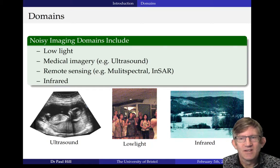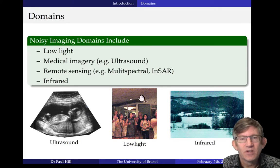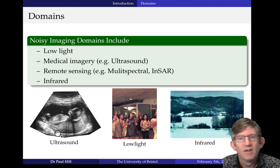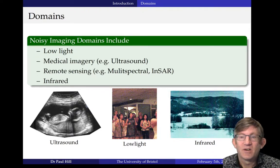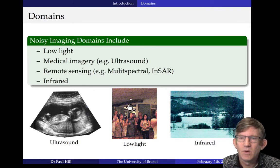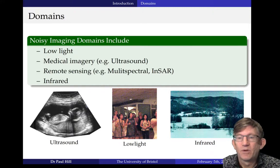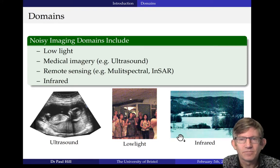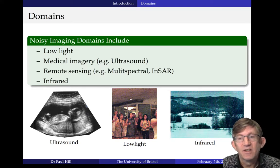Let's talk about some domains of denoising. Here are three or four different domains that all have inherent noise and lots of it. You're familiar with what ultrasounds look like — they are absolutely covered in noise, and if you could get rid of that it would be of great benefit to any diagnosis. Then low light: when you turn the ISO up of a camera and you turn the light down, you get a lot of grainy noise that really interferes with quality. And then imagery such as infrared — there's always a lot of noise in that domain. There are hundreds more examples, and noise is a very limiting factor to a lot of imagery.